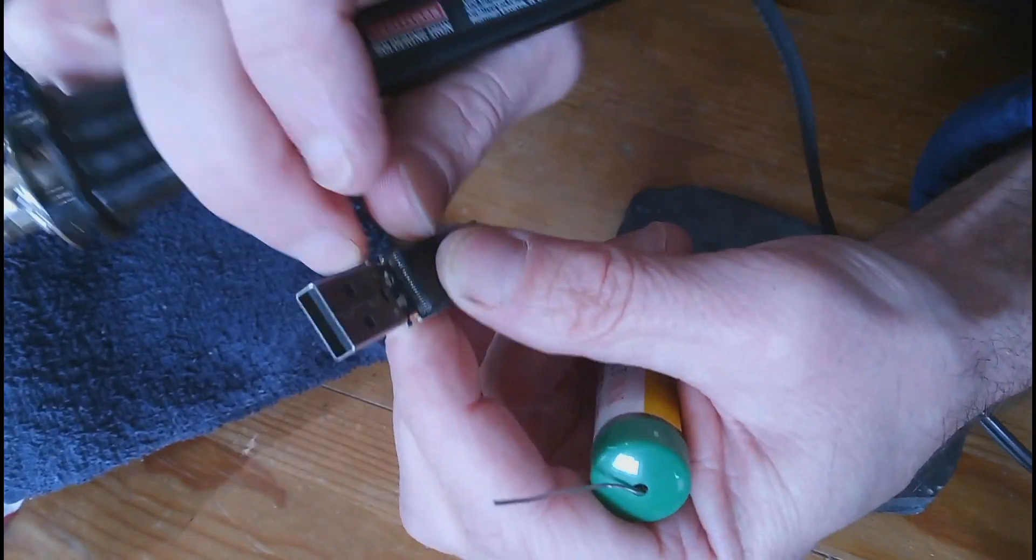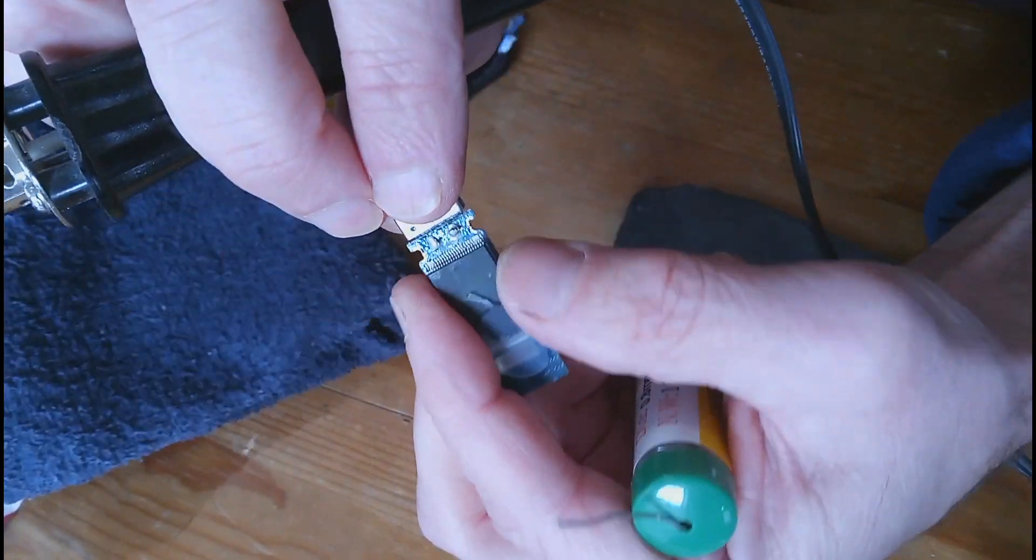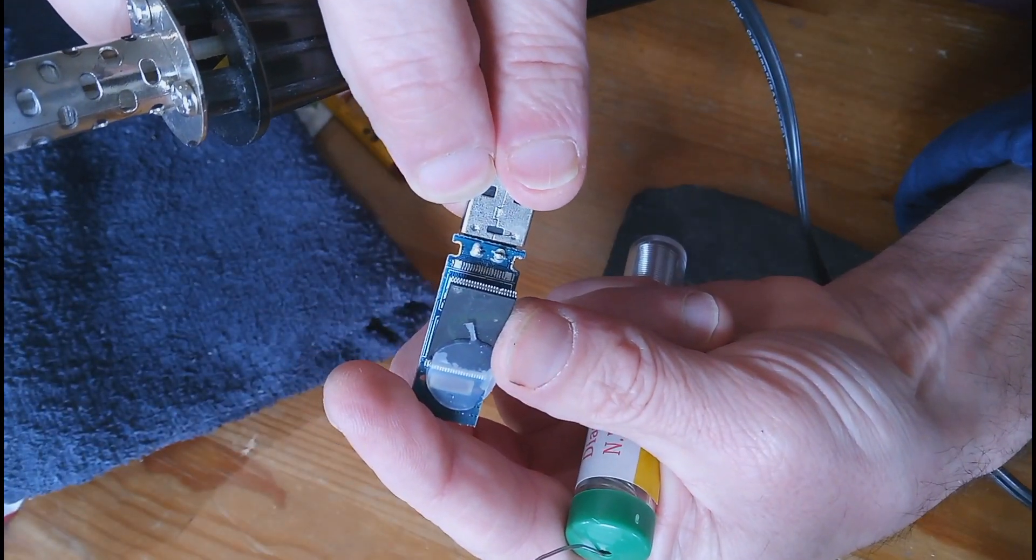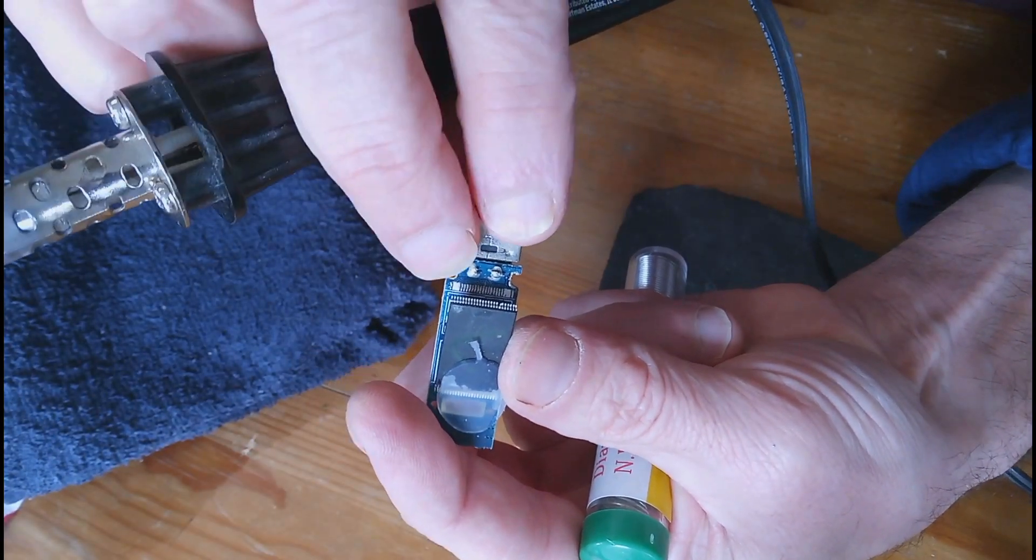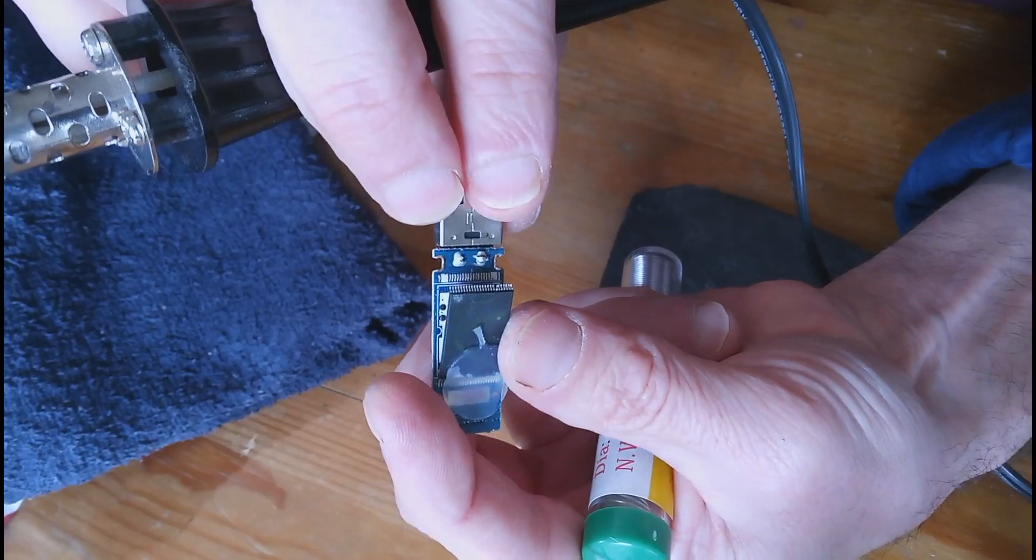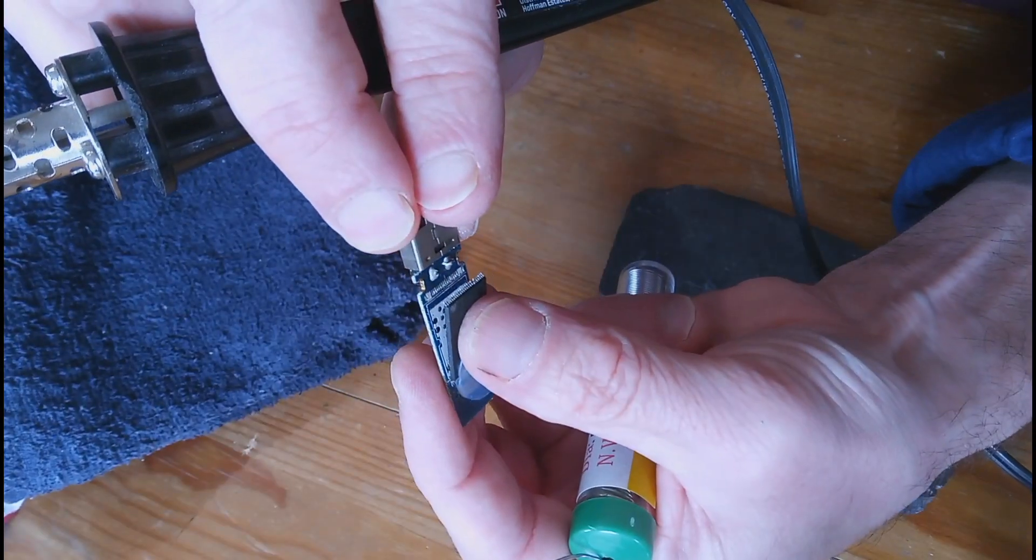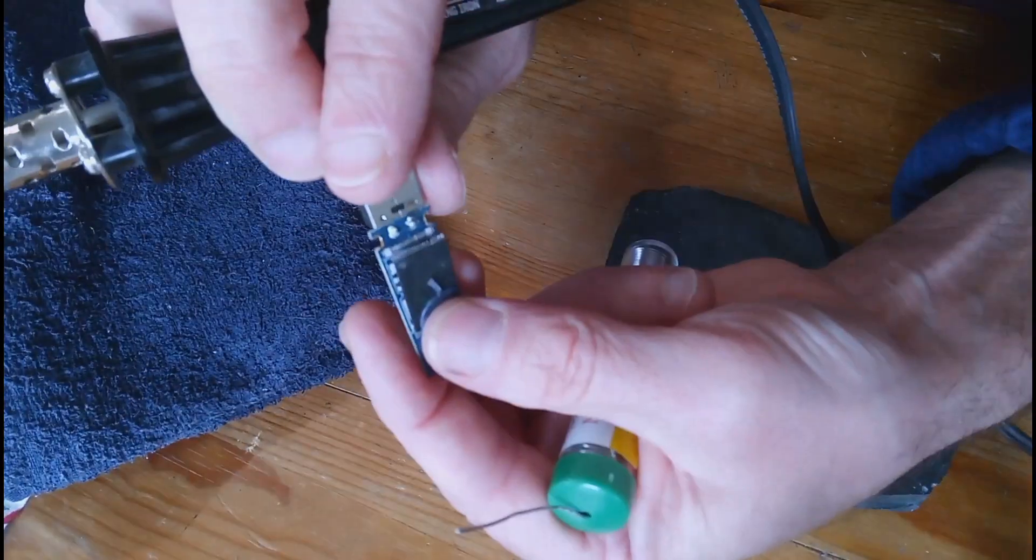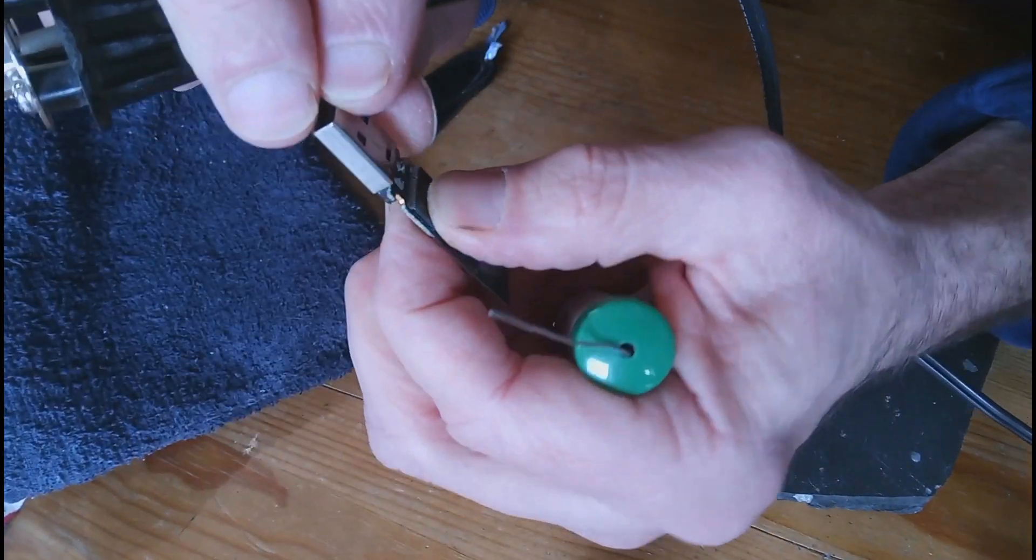I mean, you could try to glue it, I suppose. You could try to put a dab of Elmer's Pro Bond on the corners there, the white corners there and there, and then clamp that down overnight.